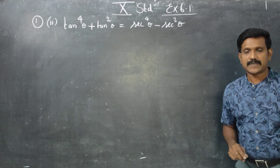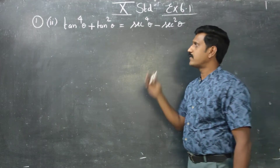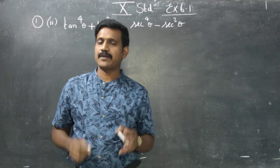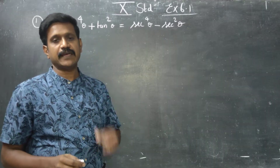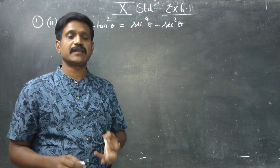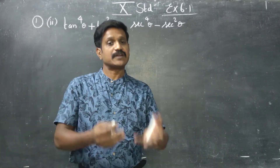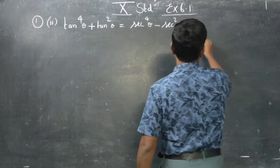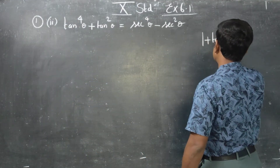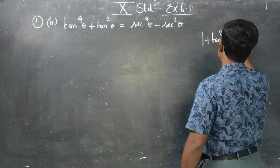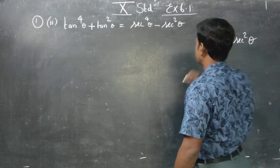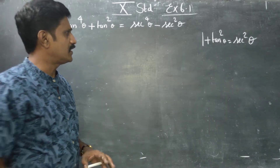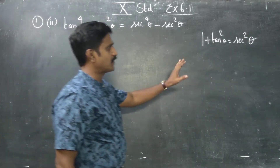RHS is on the secant side. For doing this sum, to prove this identity, we need to recall the identity formulas we learned in 9th standard. For example, 1 plus tan square theta is equal to secant square theta. Why? Because tan square and secant square are related.